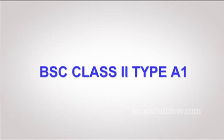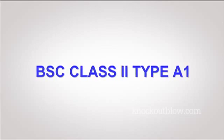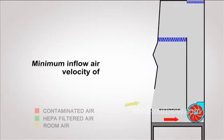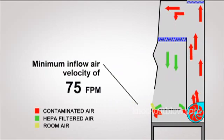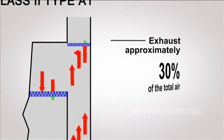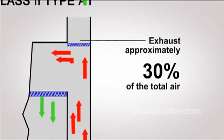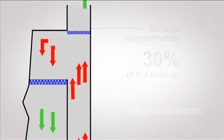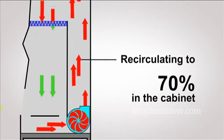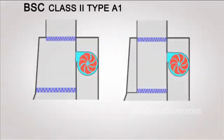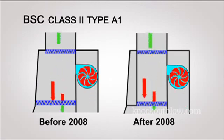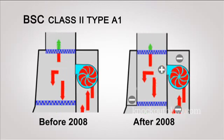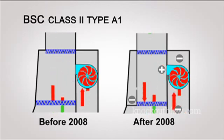BSC class 2 type A1 has a minimum inflow air velocity of 75 feet per minute through the front opening with an exhaust approximately 30% of the total air handled and recirculating to 70% in the cabinet. For cabinets built after 2008, they now come with biological ducts and plenums under negative pressure or surrounded by negative pressure ducts and plenums.